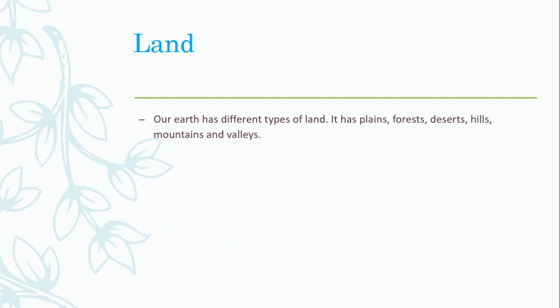Now, let's begin the chapter with land. What is land? Our earth has different types of land. It has plains, forests, deserts, hills, mountains and valleys.